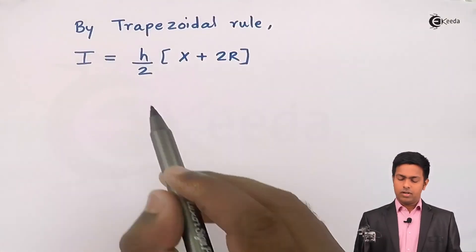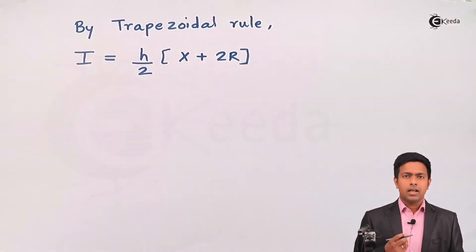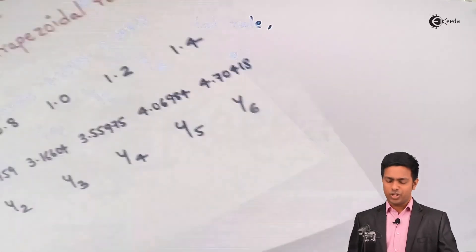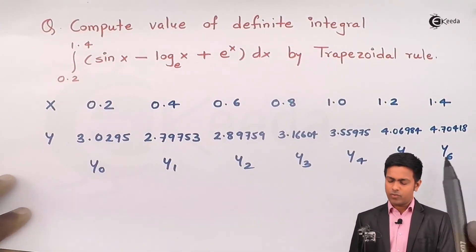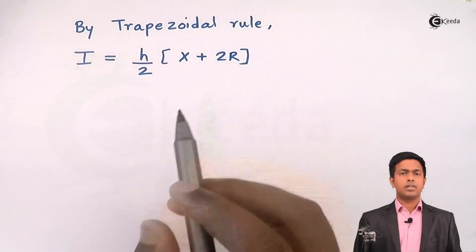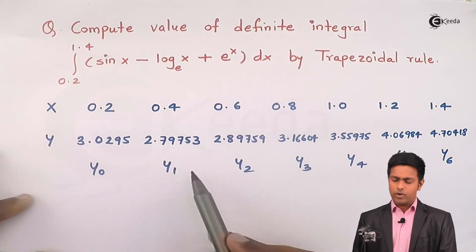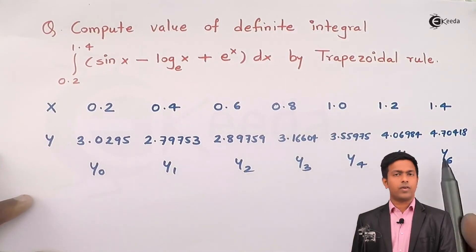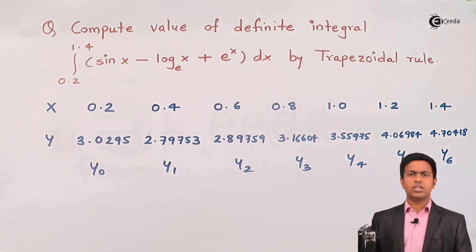So here X is nothing but sum of extreme ordinates. So the extreme ordinates are y0 and y6, sum of that will be X. And R is nothing but sum of remaining ordinates, that is sum of y1, y2, y3, y4, and y5. So we have to find this value and put it over there. Let's find it out.